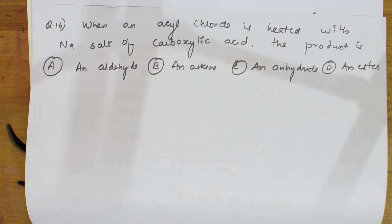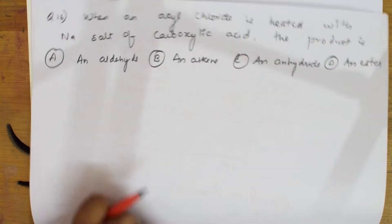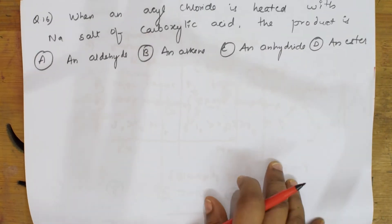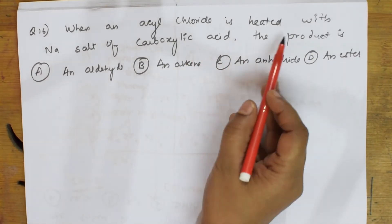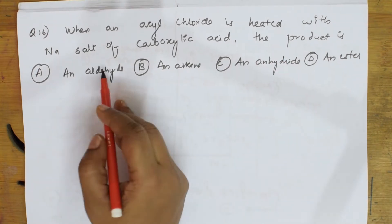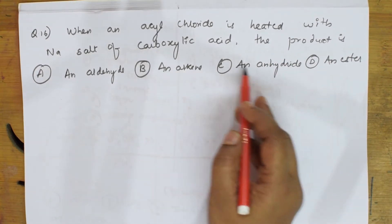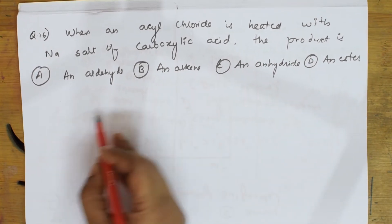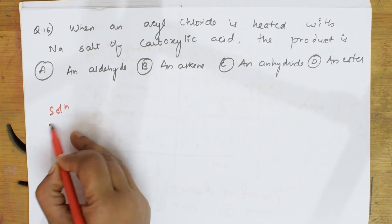After the haloalkanes from the previous question, let's see this next one. What did they give us? They said when acyl chloride is heated with sodium salt of carboxylic acid, the product formed is this. First, let us write the reaction, then we'll understand.